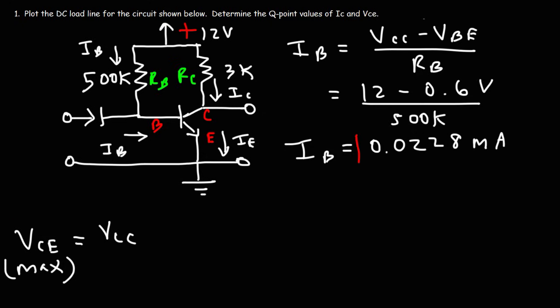Now that we have IB, we can calculate IC. One thing I forgot to give you is the beta of this transistor — let's assume the beta value is 150.